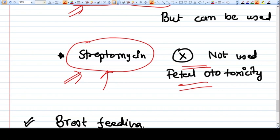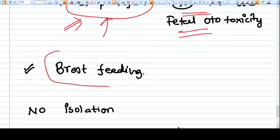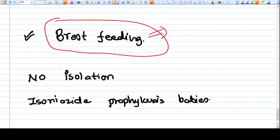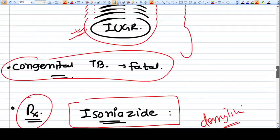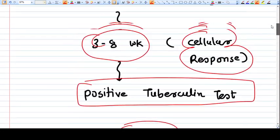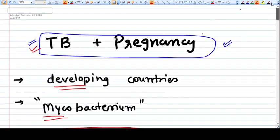The drugs which are safe in pregnancy are also safe in breastfeeding. So if the patient is breastfeeding, then also these drugs can be given. There is no need of isolation of the baby. The baby should be given isoniazide prophylaxis. This is what I think we should discuss in TB and pregnancy. Thank you, friends.